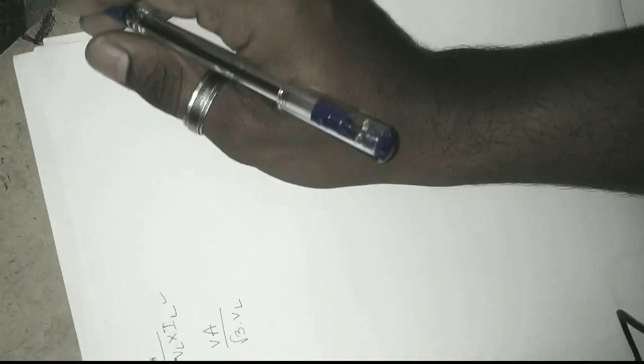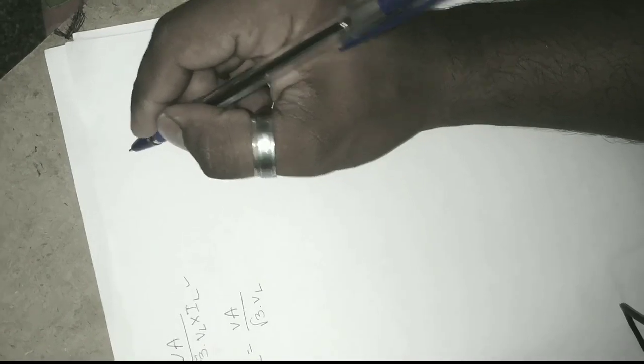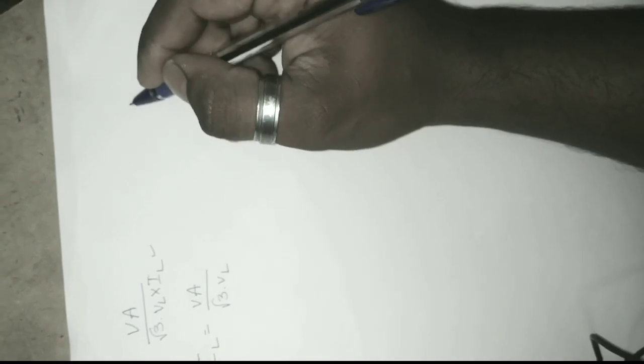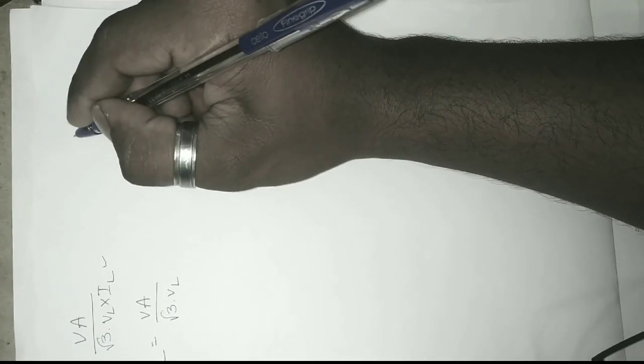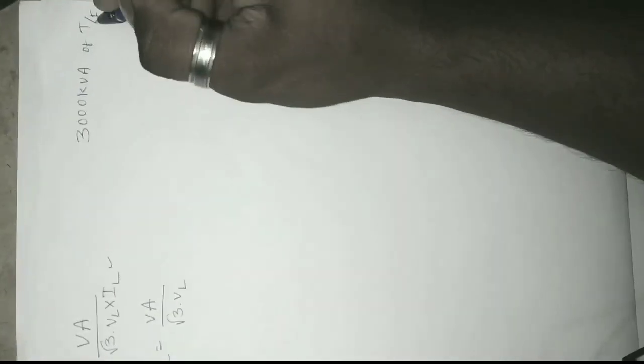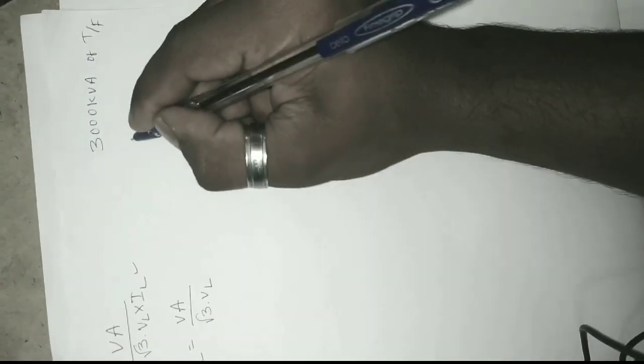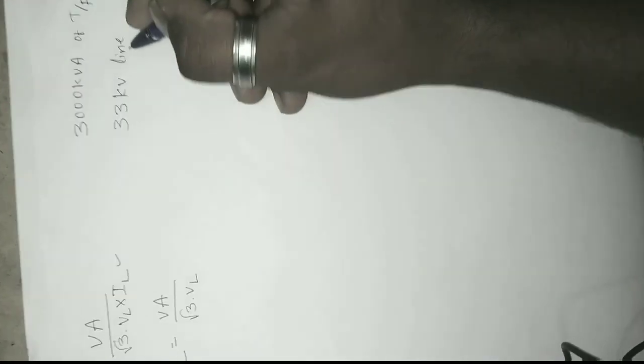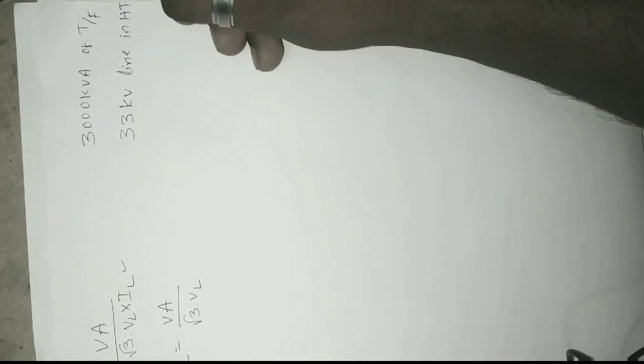Now we should know the rating of the transformer and how much voltage capacity in the HD side. Just imagine we have a 3000 kVA transformer, next 33 kV line in HD.